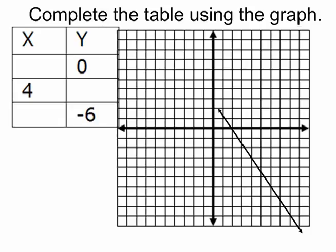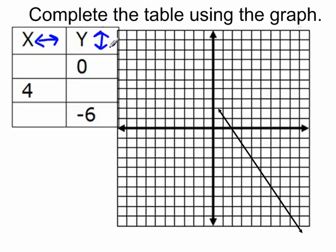In this example we're asked to complete the table using the graph. We have our function graphed here, and in the table we have our x-coordinates and our y-coordinates. Remember that x-coordinates are the horizontal movement away from the origin, so left or right, and the y-coordinates are vertical movements away from the origin, up or down.